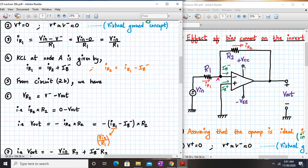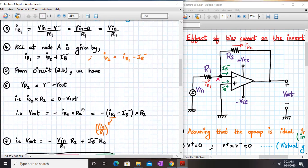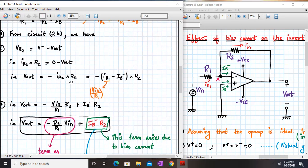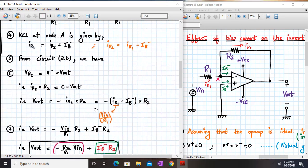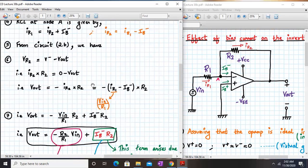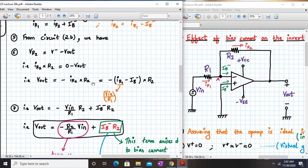Now from the circuit, we can also write that VR2 is given by V minus minus Vout. So VR2 is IR2 into R2, V minus is zero and minus Vout is minus Vout. So from here we can write Vout is equal to minus IR2 into R2, and IR2 is IR1 minus Ib minus. Now we open the bracket and IR1 is Vin upon R1. So my output Vout will be equal to minus Vin upon R1 into R2 plus Ib minus into R2.